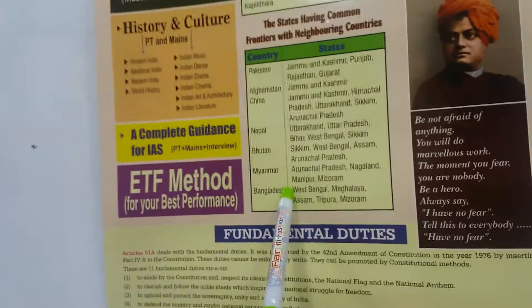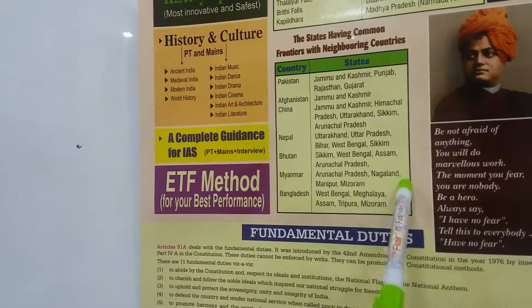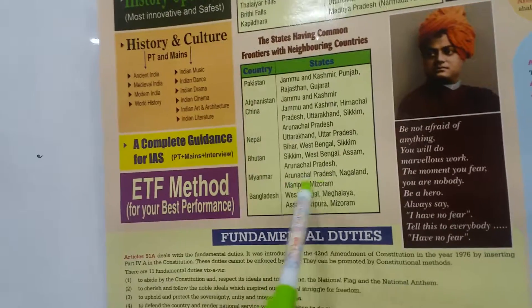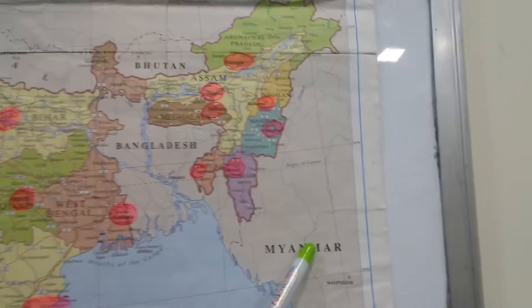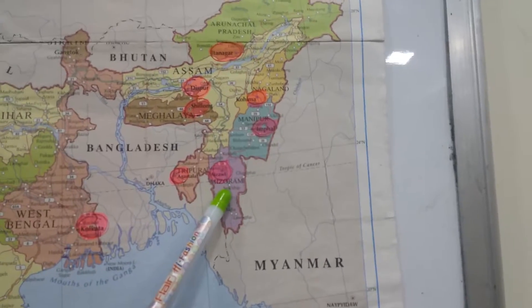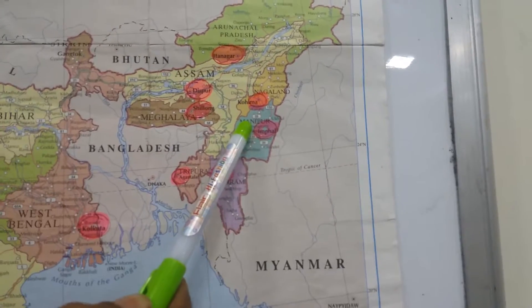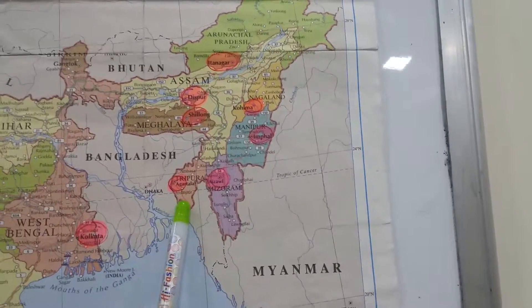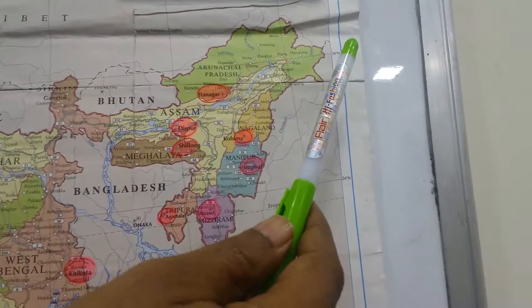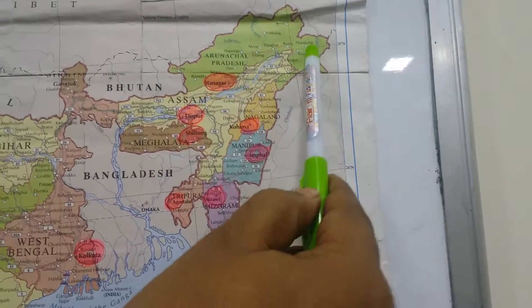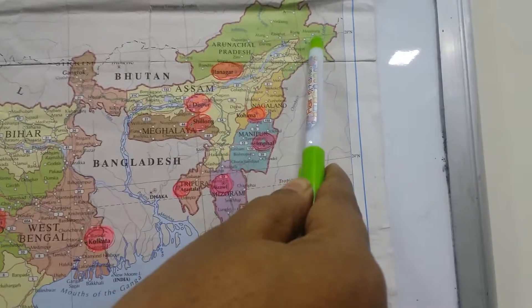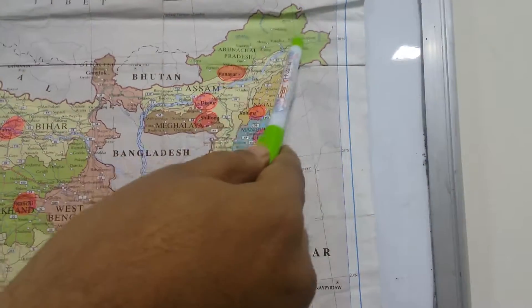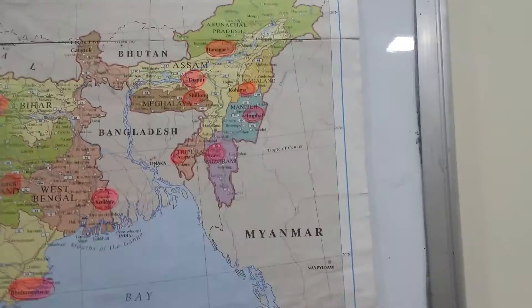Next is Myanmar. The states bordering Myanmar are: Arunachal Pradesh, Nagaland, Manipur, and Mizoram — four states. Aap dekh sakte hain — yeh aapka Mizoram hai, Manipur hai, Nagaland hai, aur Arunachal Pradesh se bhi laga hua hai. So Myanmar ke boundary se laghe huay states: Mizoram, Manipur, Nagaland, aur Arunachal Pradesh hain.